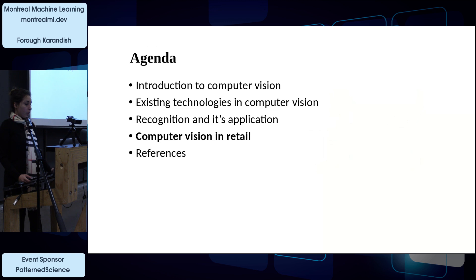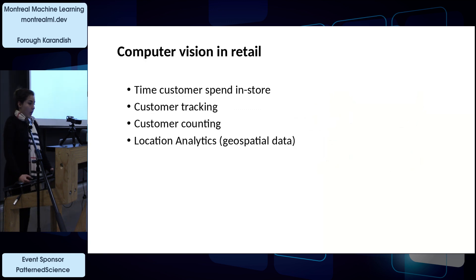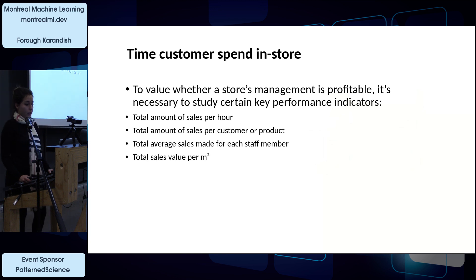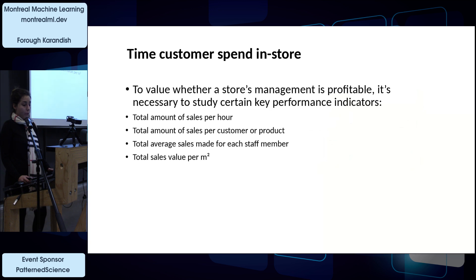Now we move to computer vision in retail and how we can use it to make a profit. We use computer vision to track the time customers spend in the store, customer tracking, customer counting, and location analysis. Key performance indicators include total sales per hour, total sales per customer or product, average sales per staff member, and total sales value per square meter.